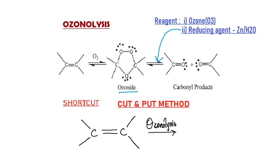Now let's see what is the shortcut method here. The shortcut is called the cut and put method. When you're trying to figure out the ozonolysis product of a particular alkene, all you have to do is cut the double bond, put oxygens across it, and your ozonolysis products are ready.